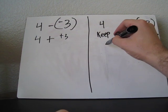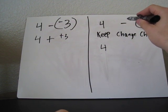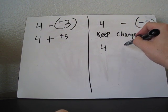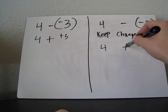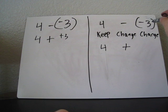So let's rewrite it right here. You keep 4. You change that from a subtract to the opposite, which is adding. And you change this right here to the opposite. So if it's negative 3, it's going to be a positive 3.